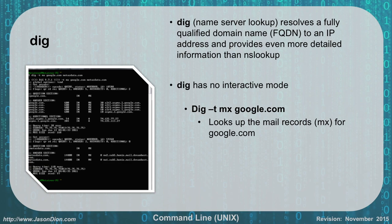DIG is another way to do name server lookup, giving you a fully qualified domain name to IP address resolution that's even more detailed than NSLookup. DIG has no interactive mode. To get mail records, you would type 'dig -t MX google.com', and it will return the mail records for Google — the server names and their corresponding IP addresses. Remember, MX records are for mail and A records are for addresses.